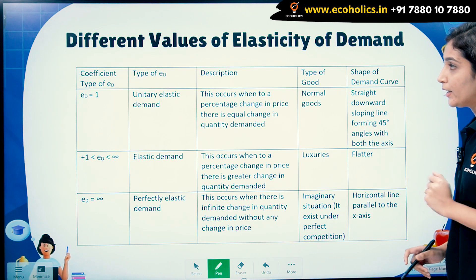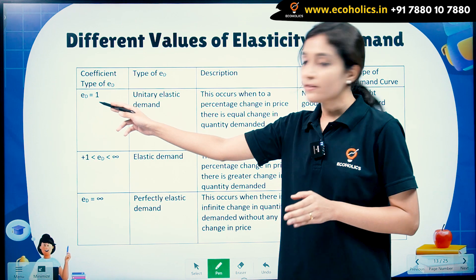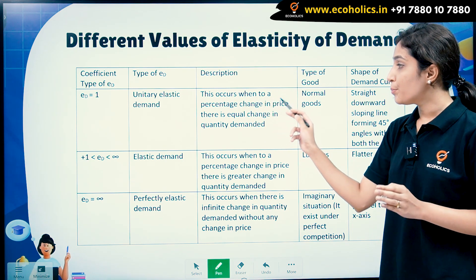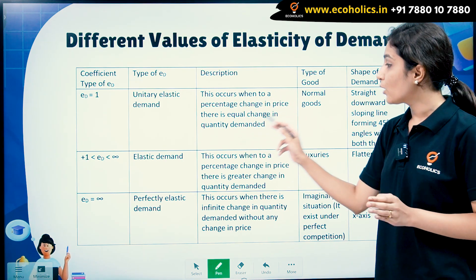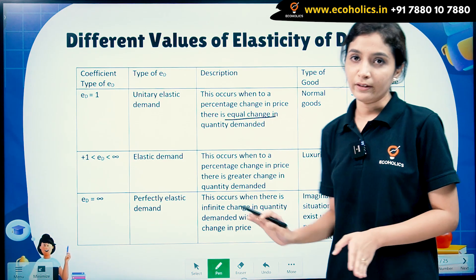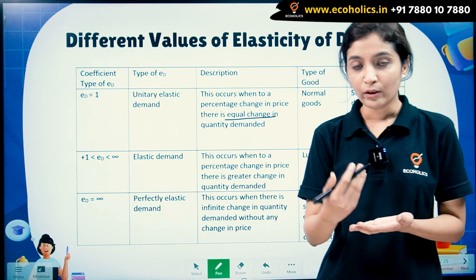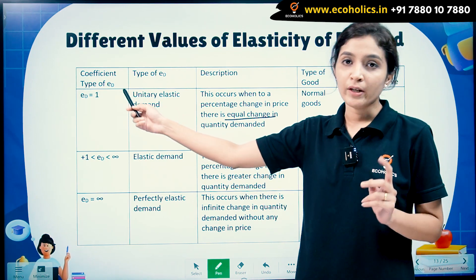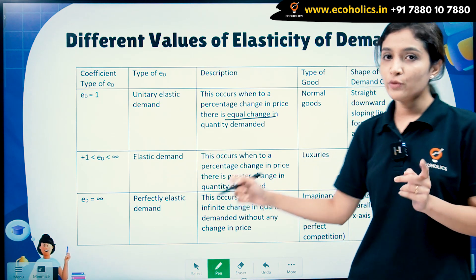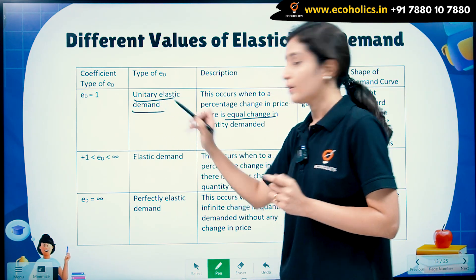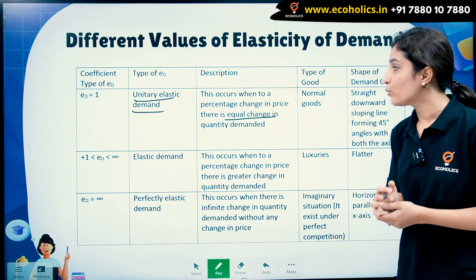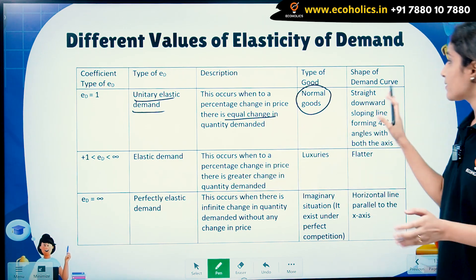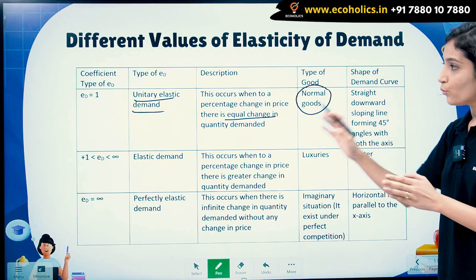When the elasticity of demand is 1, this occurs when, to a percentage change in price, there is an equal change in the quantity demanded. For example, if the price increases by 10%, the quantity demanded also falls by 10%. In this case, elasticity is equal to 1, and the type of elasticity is unitary elastic demand. An example of this would be normal goods.